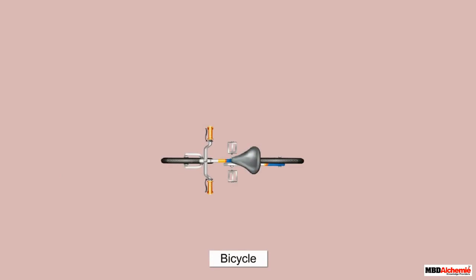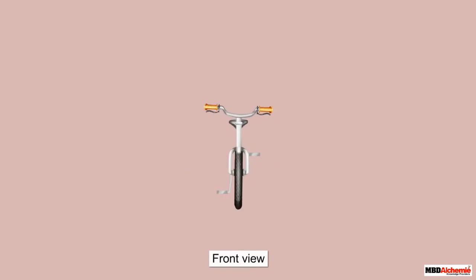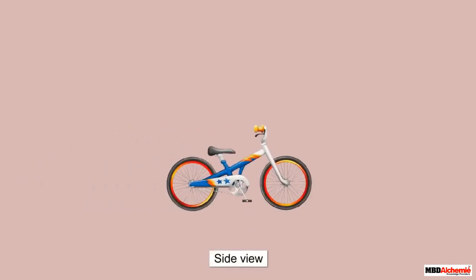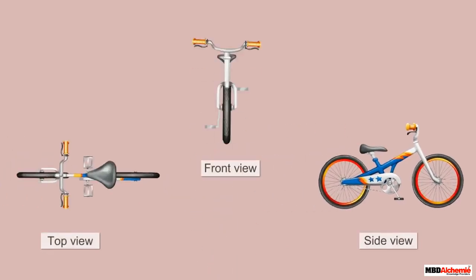Bicycle. Top view of a bicycle. Front view of a bicycle. Side view of a bicycle. These are the three views of a bicycle.